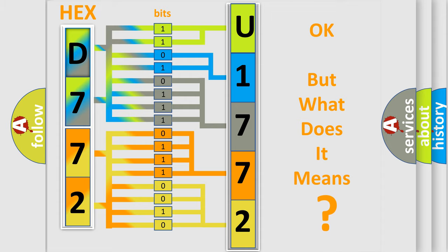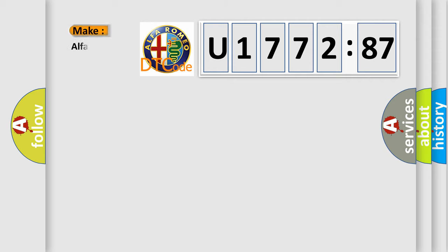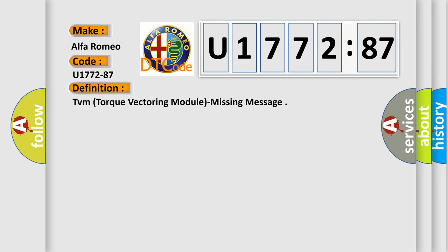The number itself does not make sense to us if we cannot assign information about what it actually expresses. So, what does the diagnostic trouble code U177287 interpret specifically? Alfa Romeo car manufacturers. The basic definition is: TVM torque vectoring module missing message.